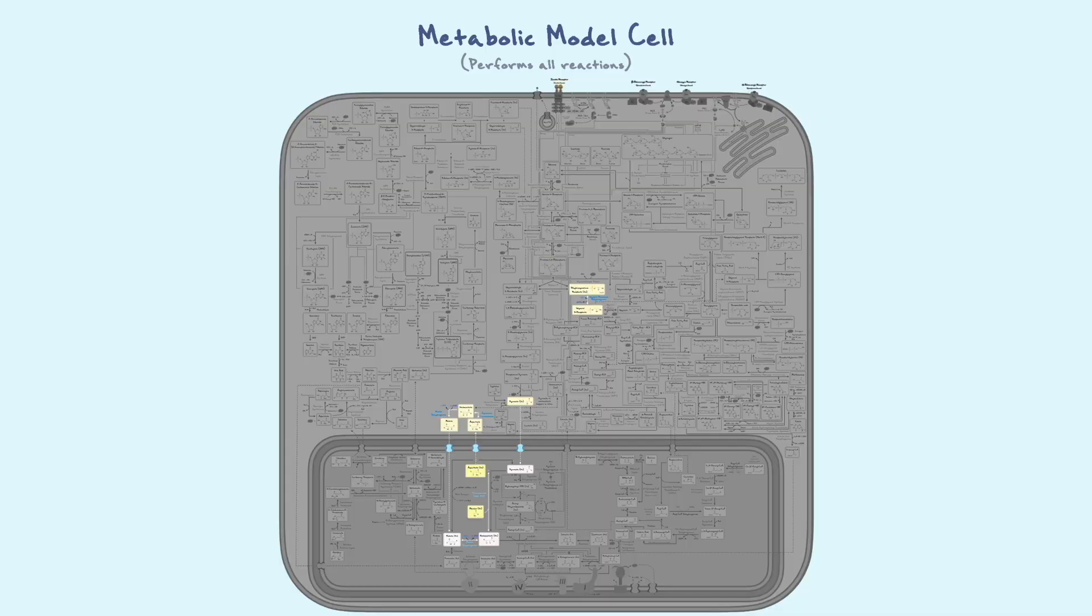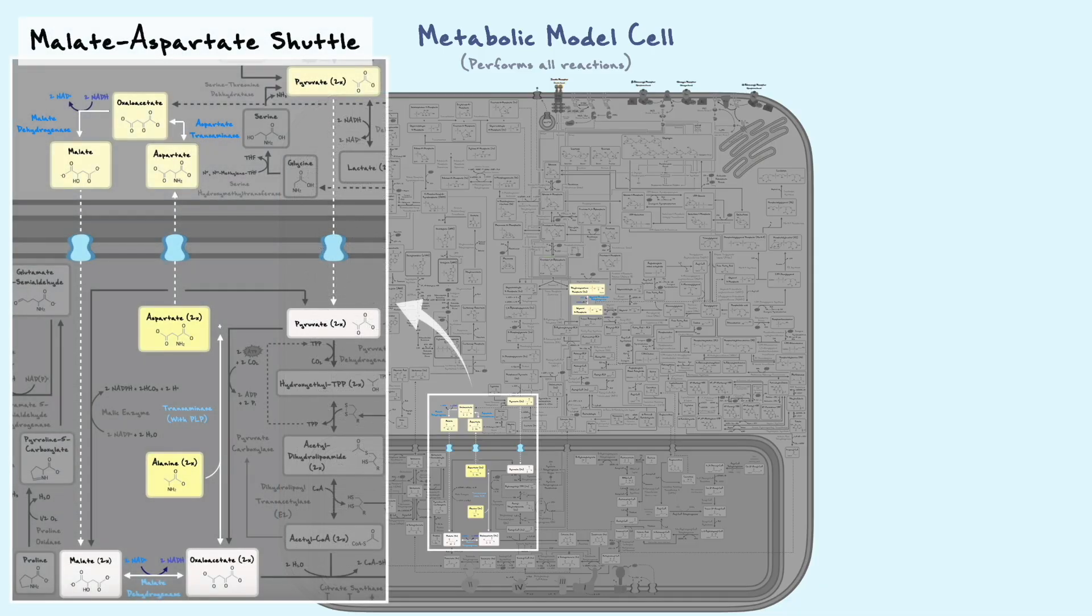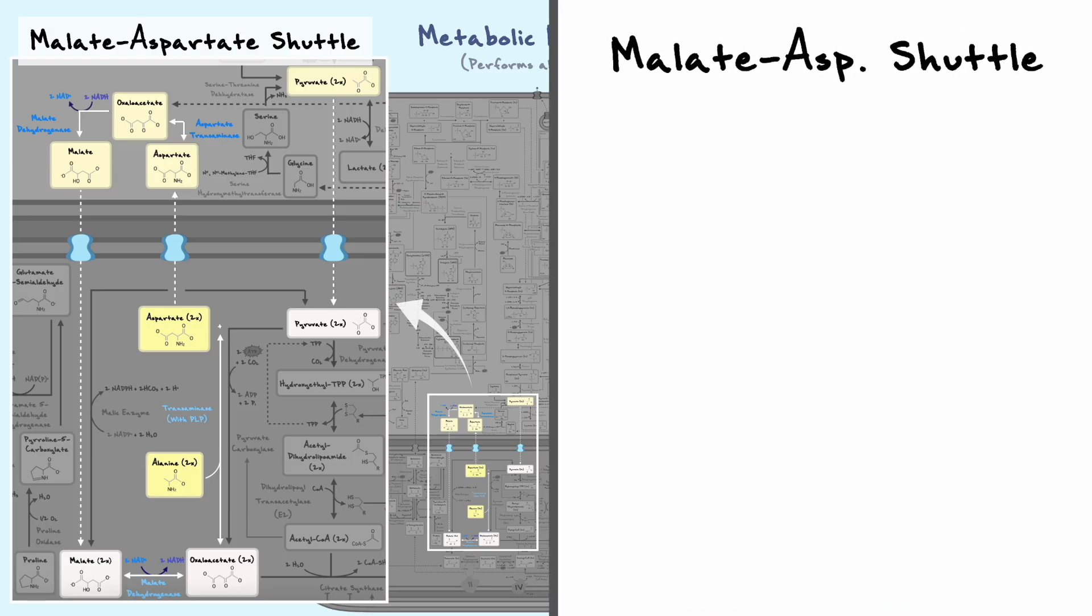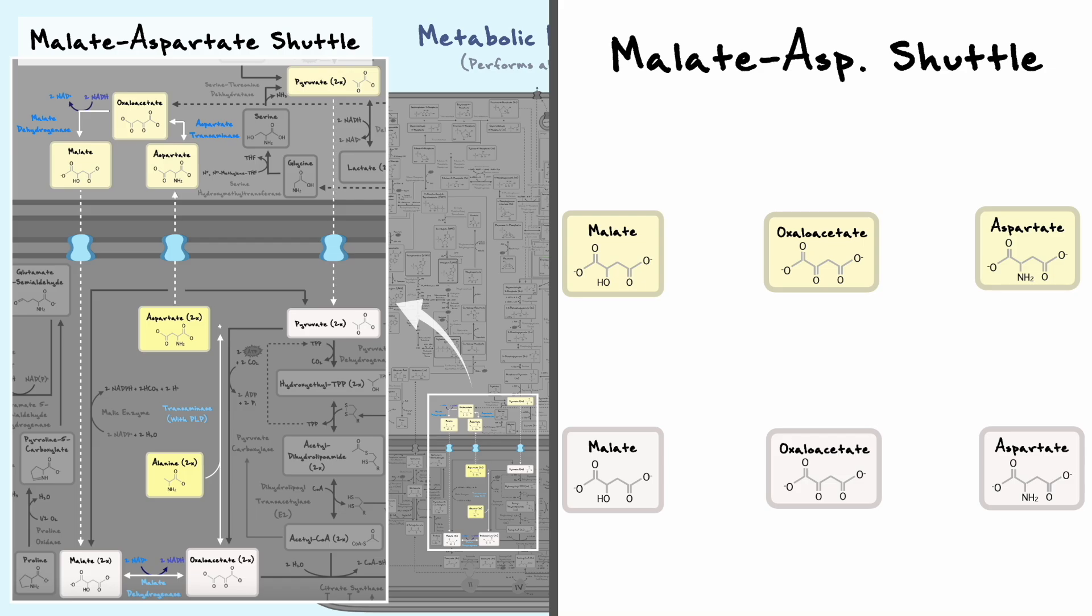The two main mechanisms to transport NADH into the mitochondrion are the malate-aspartate shuttle and the glycerophosphate shuttle. If we first consider the malate-aspartate shuttle, this mechanism primarily uses three substrates to move things around: malate and aspartate, as the name implies, as well as oxaloacetate, which bridges the two.